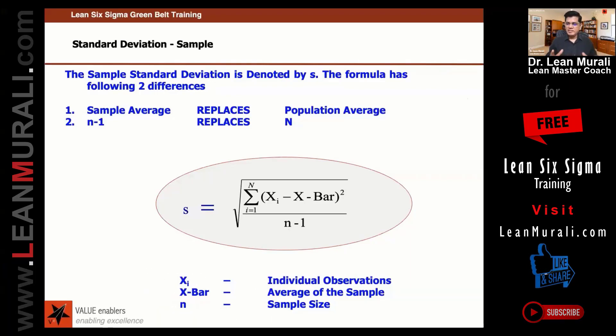n-1 is called degrees of freedom. This is a bit of mathematics which I don't want to share in this forum. If it's a population—if you have 130 crores of people in India—then minus 1 doesn't make any difference. But if you're talking about 100 minus 1, that's called degrees of freedom.